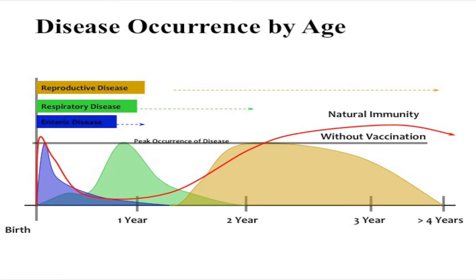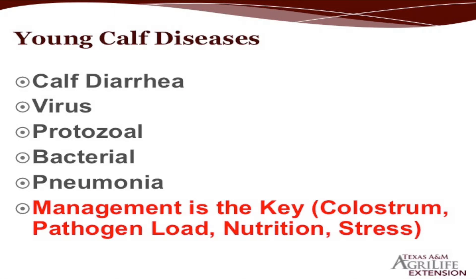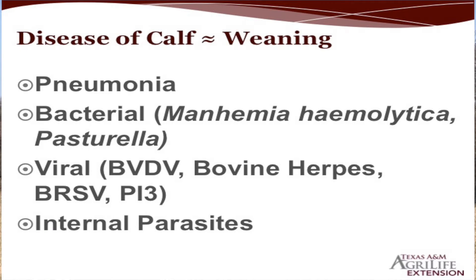Animals have different disease risks by age. Baby calves when they hit the ground are primarily at risk for gastrointestinal problems — scours, diarrhea — with occasional pneumonia. Then around six to seven months at weaning, the issues shift more toward respiratory problems. You have the stress of weaning, commingling, and movement into stocker or feeder operations. That's when we start to see a lot of respiratory problems, though some gastrointestinal problems continue.